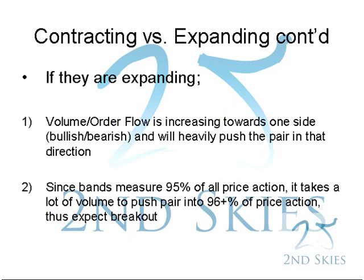When the bands are expanding, that means the volume or order flow is increasing or accelerating towards one side — either the bulls or the bears — and this will heavily push the pair in one particular direction, giving us clues to market direction and where we want to trade. Since the bands measure approximately 95% of all price action, it must take a lot of volume to push the pair into the 96th, 97th, 98th, and 99th percentile, giving us clues as to where we want to be with the pair.